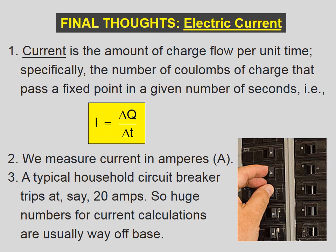Current is the amount of charge flow per unit time. Specifically, the number of coulombs of charge that pass a fixed point in a given number of seconds, i.e., I equals amount of charge divided by time. We measure current in amperes, symbolized by capital A. A typical household circuit breaker trips at, say, 20 amps. So huge numbers for current calculations are usually way off base.